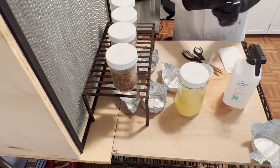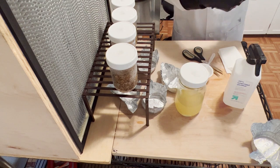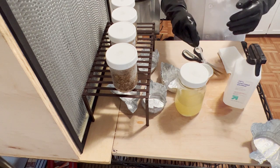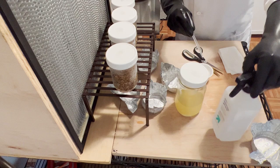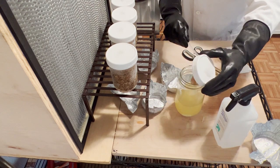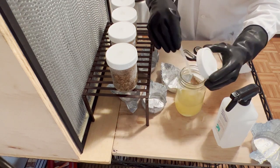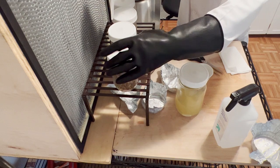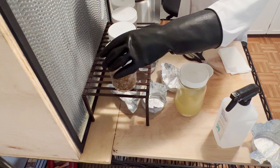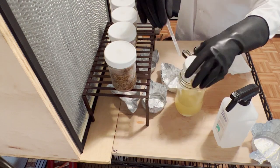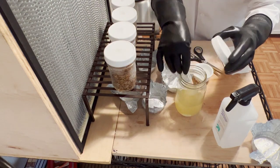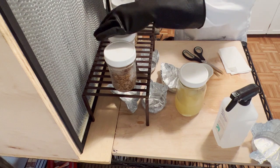Now we're ready to inoculate our grain with liquid culture. I'm just thinking this alcohol out of here. I'm going to put in each one of these, I'm going to put two squirts of a full pipette. I'll do the same thing for all of these jars.